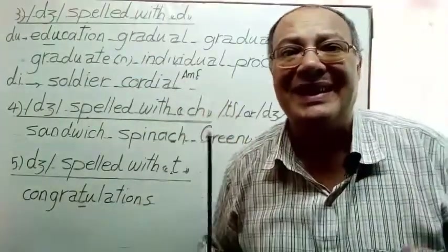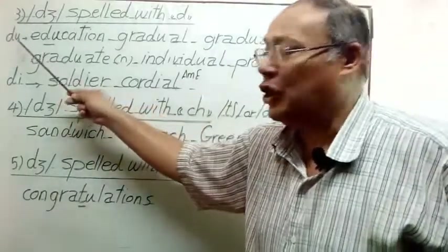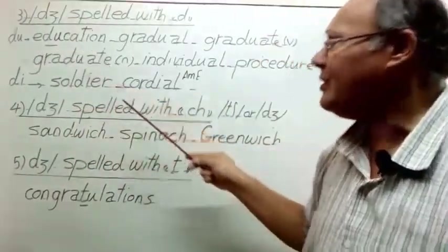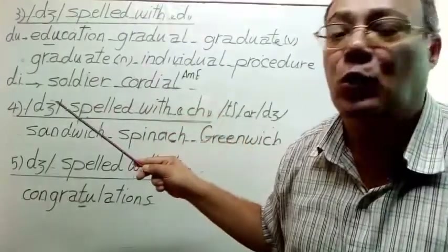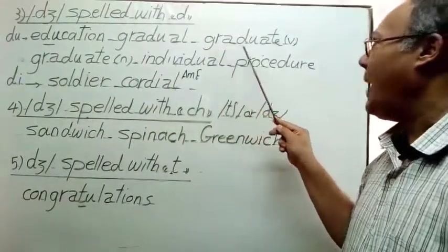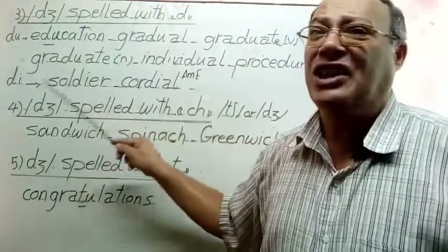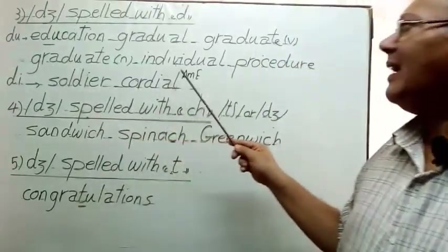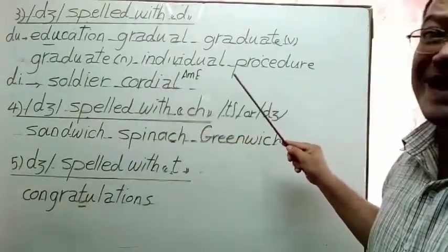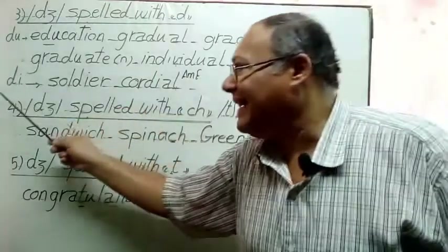Another pattern is D followed by U, where D is spelled with DJ. Examples include: Education, Graduate — both as a noun and as a verb — Individual, and Procedure.